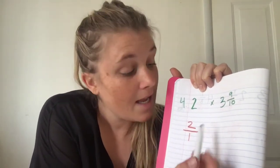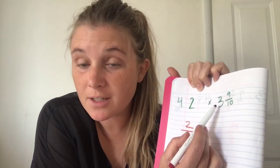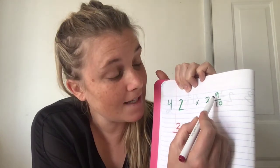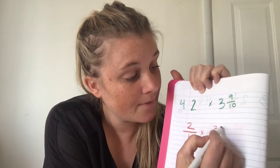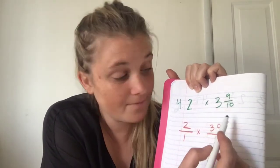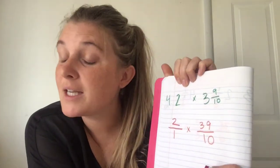Okay, now times by, we need to change this into an improper fraction. Do you remember how to do that? Three times by ten is thirty. Plus nine is thirty-nine. And then what denominator do we use? That one. Okay, so we did our first step. Change mixed numbers into improper fractions. Good.